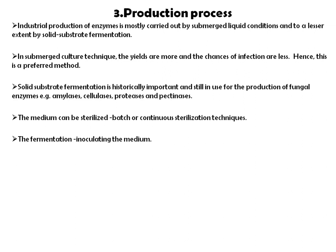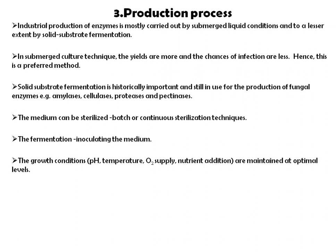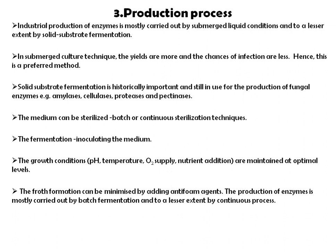During fermentation, the growth conditions — pH, temperature, oxygen supply, and nutrient addition — are maintained at optimal levels, and froth formation can be minimized by adding an anti-foaming agent. Enzyme production is mostly carried out by batch fermentation. In batch fermentation, a suitable amount of inoculum and medium are placed into the fermenter and kept for a particular period of time, after which isolation and purification begins. There is no addition of inoculum or medium in between.